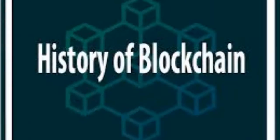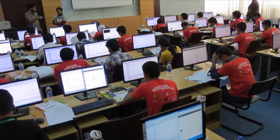Hello viewers, welcome to my YouTube channel. Today I will discuss the history of blockchain. To know about the history of blockchain, you must need to know about the words 'block' and 'chain.' Blockchain is a composite of two different words — block and chain. A group of scientists used these terms in 1991.